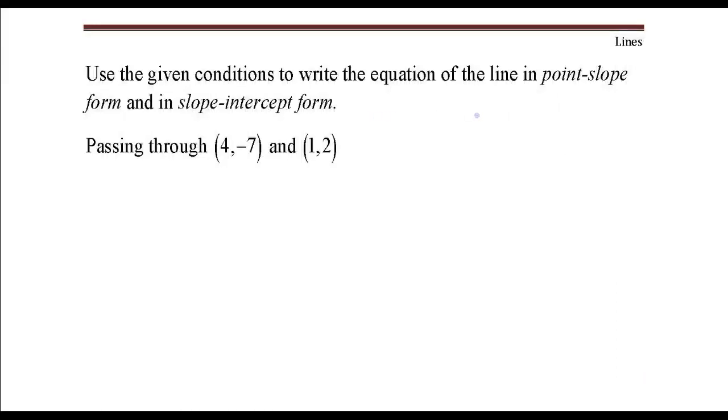Okay, I want to write the equation of a line first in point-slope form and then in slope-intercept form. And that equation of that line is going to pass through these two points.